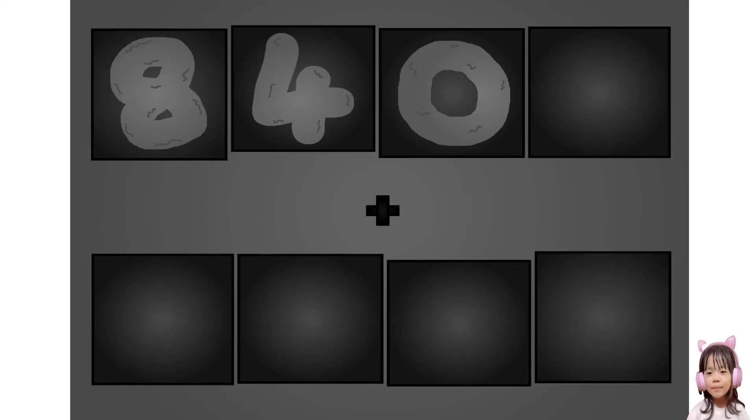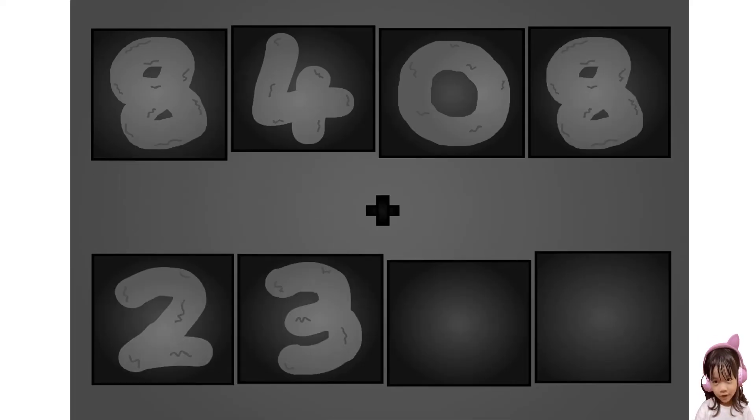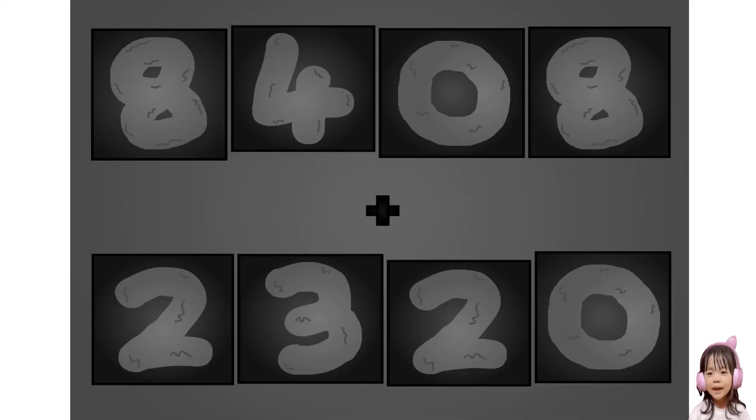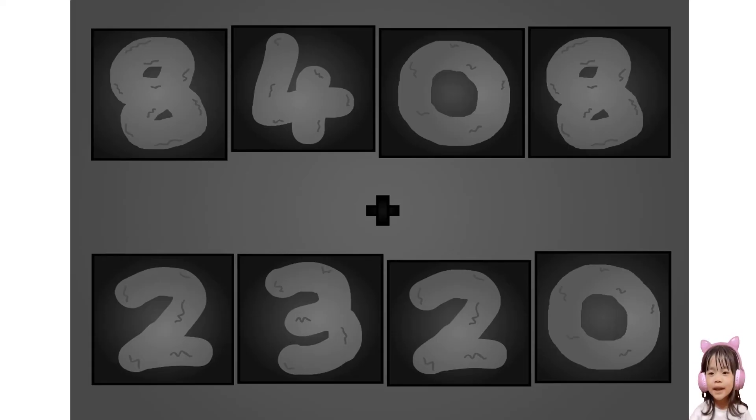One two zero eight plus two three two zero zero. These big number blocks are going to show it off by adding.